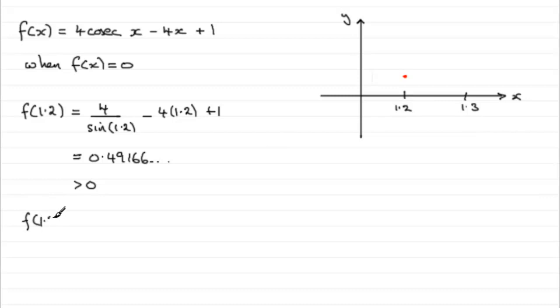f of 1.3. And similarly if you substitute this into here doing much the same as what we've done there, you'll find that you get minus 0.0487 and so on. So you can see that this is now a negative value, less than zero.